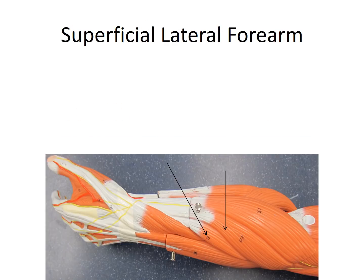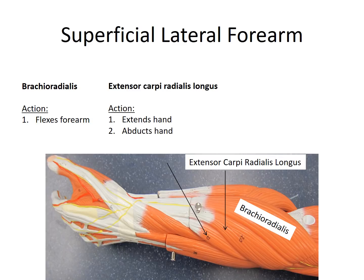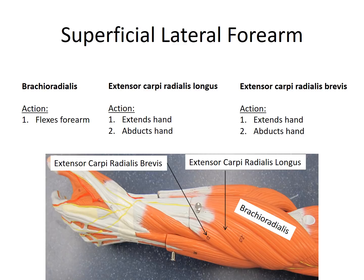Now we're looking at the superficial lateral forearm. The first muscle is the brachioradialis — 'brachio' refers to the arm and 'radialis' to the radius, so this muscle spans from the arm into the forearm on the lateral side. Its action is to flex the forearm. Next is the extensor carpi radialis longus, which extends and abducts the hand. Then we have the extensor carpi radialis brevis, which also extends and abducts the hand.